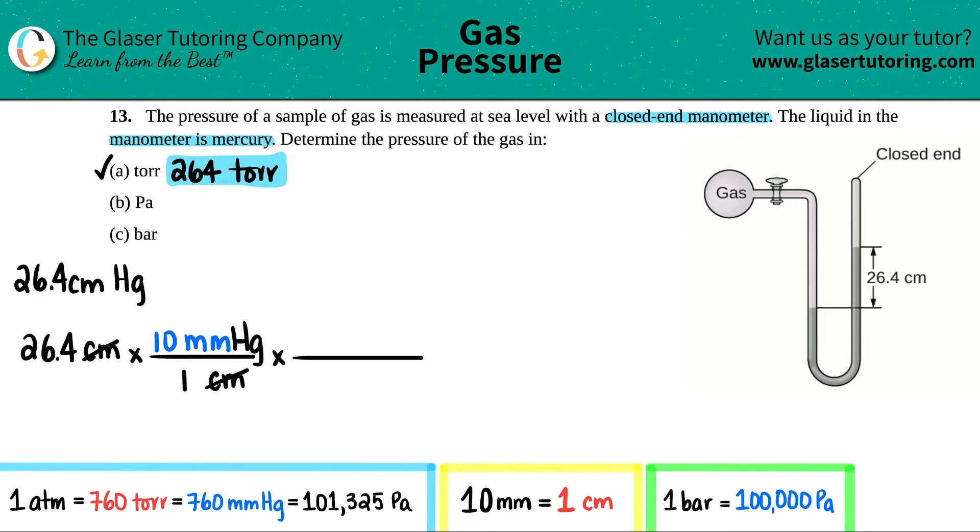I don't want to go to torr anymore, I want to go to millimeters of mercury. Times by the ratio, millimeters of mercury goes on the bottom and pascal goes up on the top. Since they're all equal to each other, I'm just going to take the two that I need. 760 millimeters of mercury equals 101,325 pascal, so 101,325 goes on the top and 760 goes on the bottom. Cancel out the millimeters of mercury.